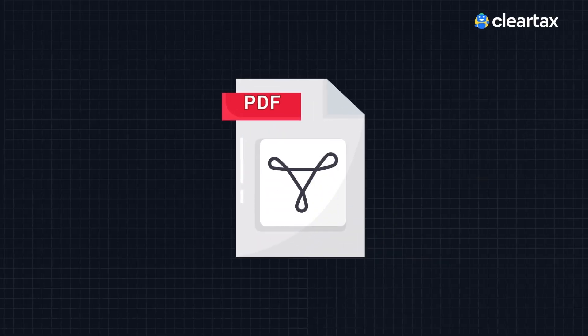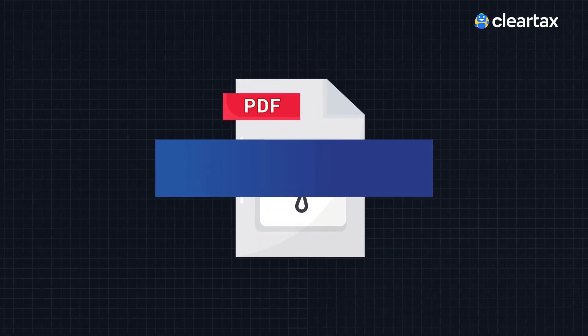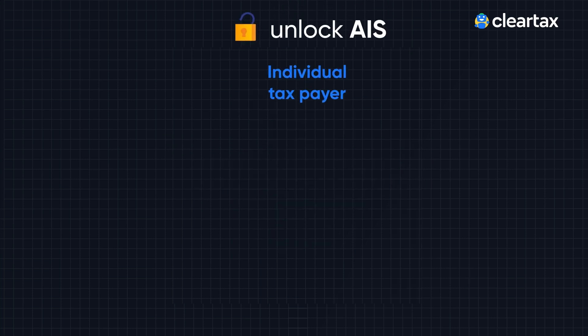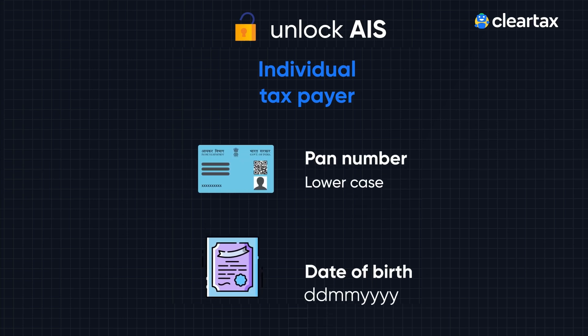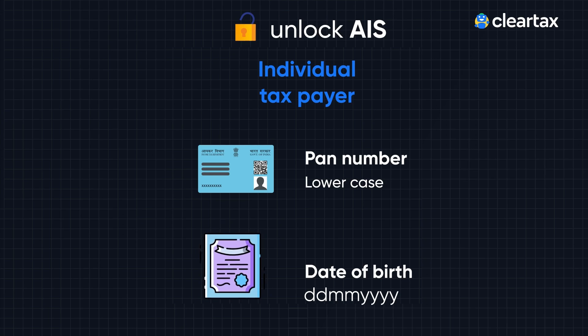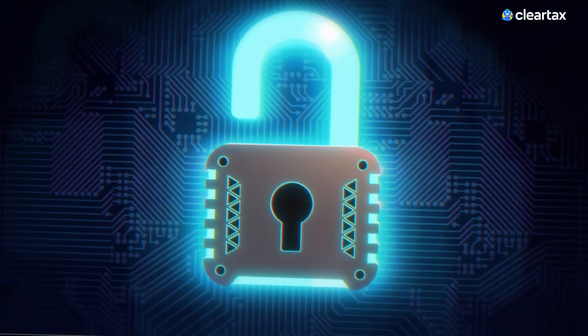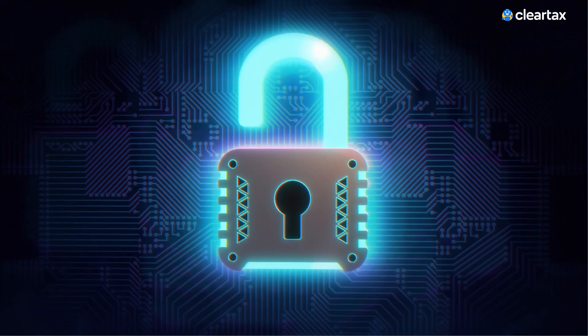After uploading, ClearTax will automatically fill the password. In some cases, you might be required to enter the password manually to unlock the AIS file. The password for the AIS file is your PAN number in lowercase letters followed by your date of birth in date, month, year format as shown on the screen. Rest assured, your data is secure and encrypted.